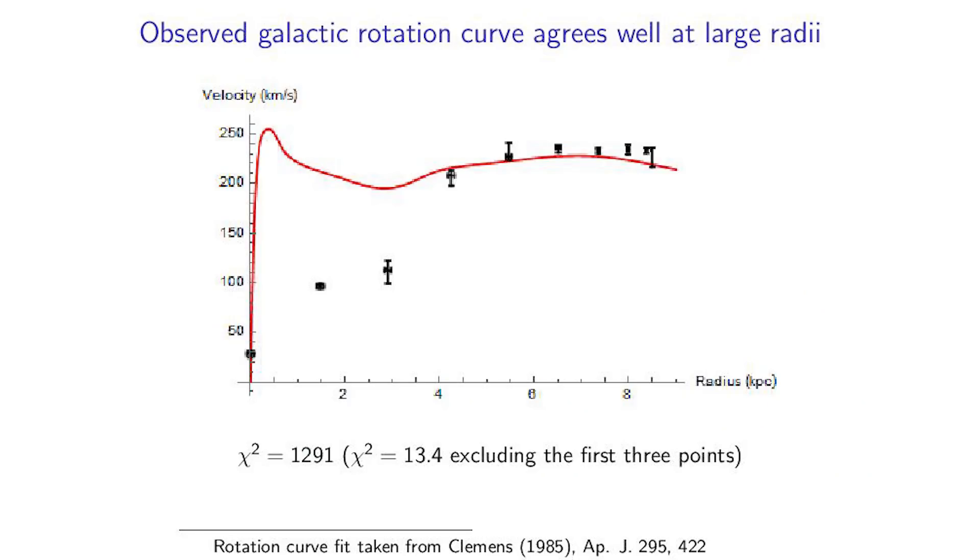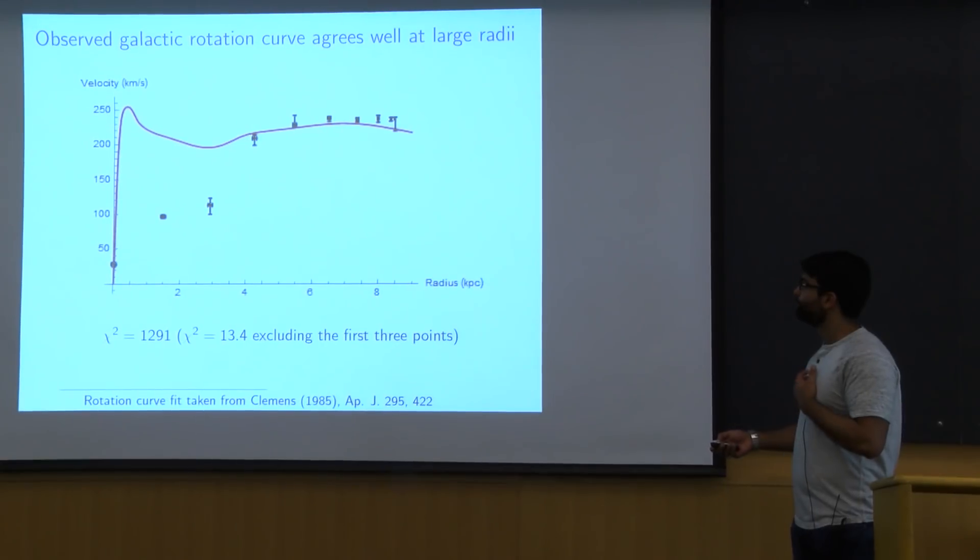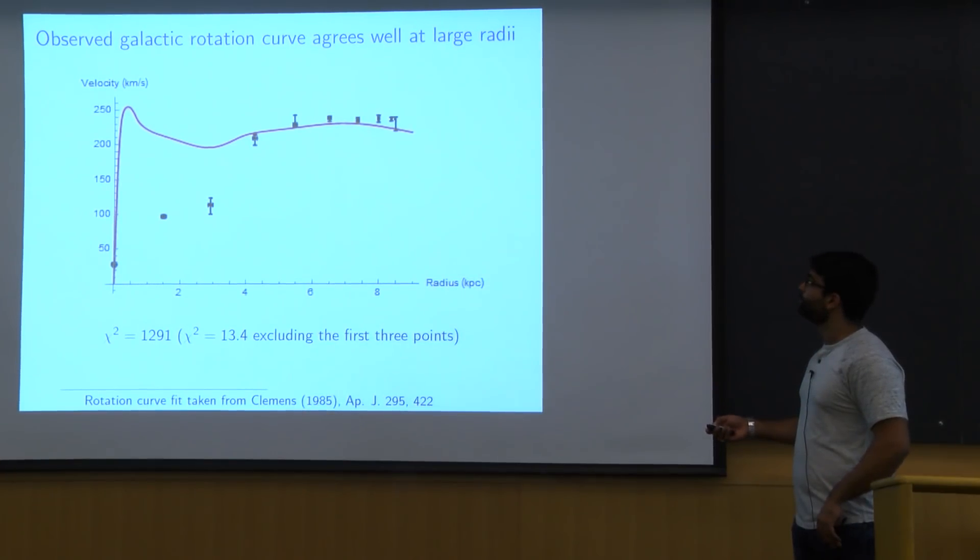So we see if we look just at the later points, we actually get a pretty decent chi-squared of 13.4. So this agrees fairly well with the literature.